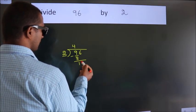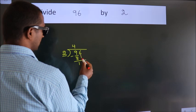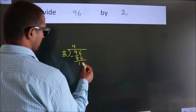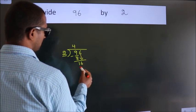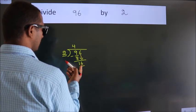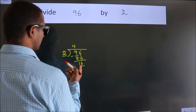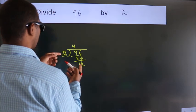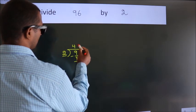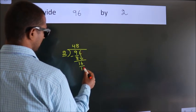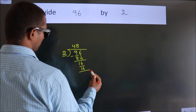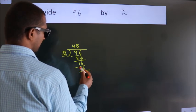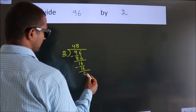After this, bring down the beside number — so 6 down, making 16. When do we get 16 in the 2 times table? 2 eights is 16. Now we subtract. We get 0.